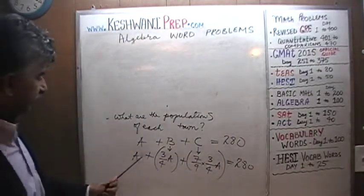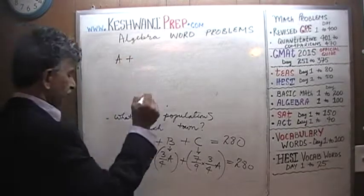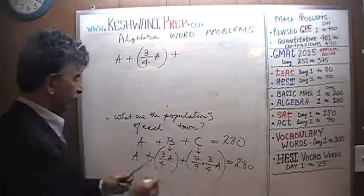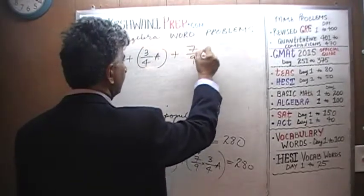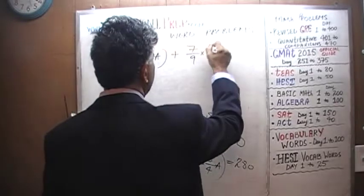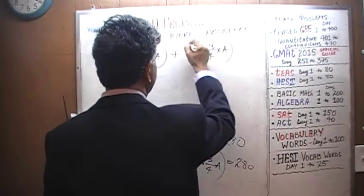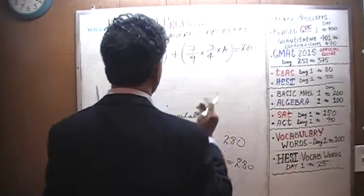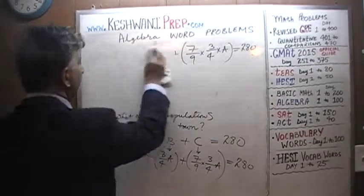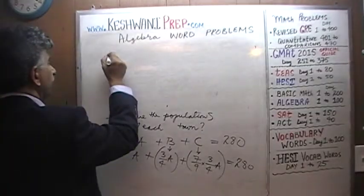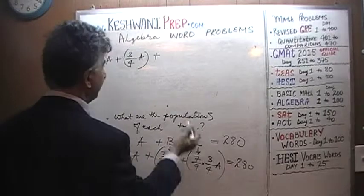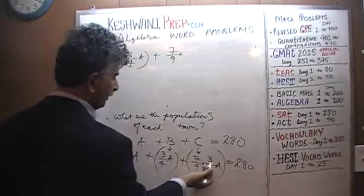So first we are going to rewrite the equation just the way it is. Population of town A, plus population of town B which is three quarters of A, plus population of town C which is seven ninths of B — but B of course we know is three quarters of A — and they have to add up to 280.